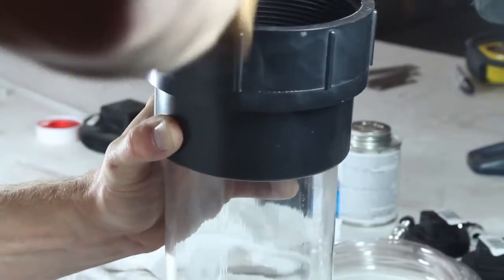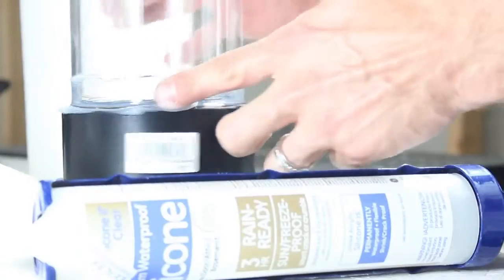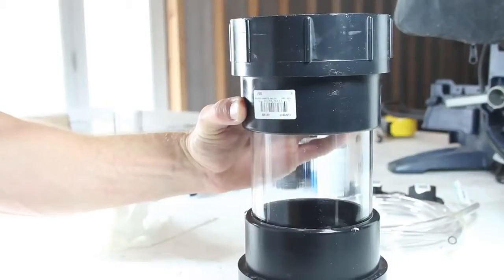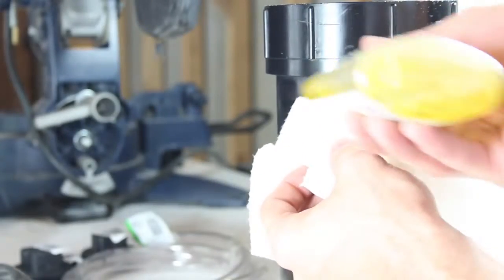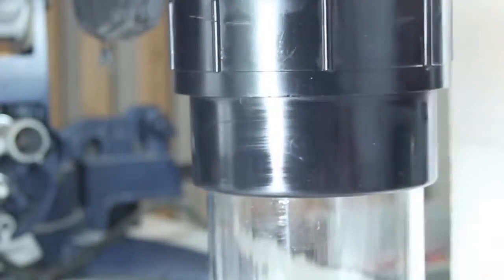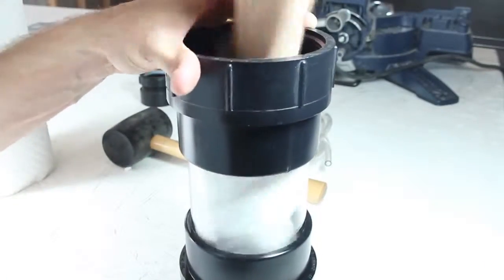Now we can flip this over and repeat the process of attaching, caulking this part and this part, tapping into place, and cleaning up the excess. While I'm in the mood for cleaning, I'll use my adhesive remover to assist in cleaning off the UPC stickers, then give everything one final wipe down.